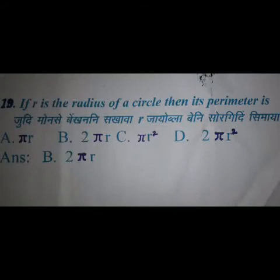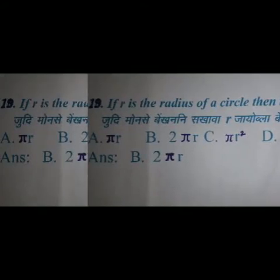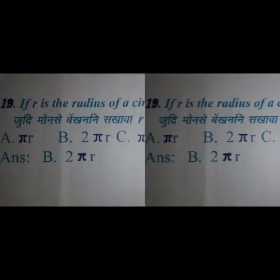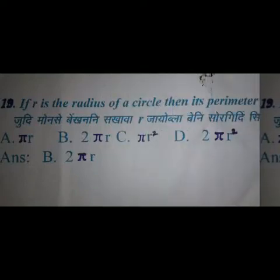If R is the radius of a circle, then its perimeter — we have four options and the right answer is option B: twice pi r (i.e., 2πr).